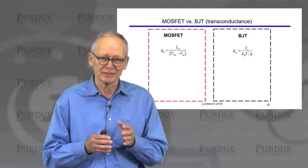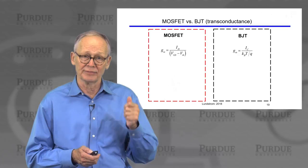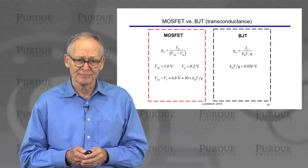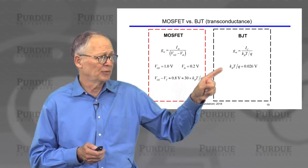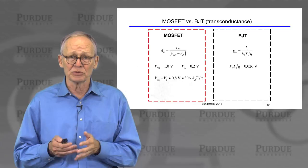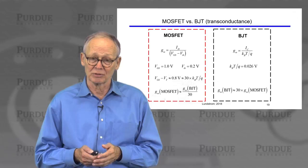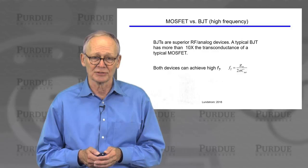Now we compared MOSFETs and bipolars. A key figure of merit for a transistor as an analog amplifier is its transconductance. We can write the transconductance as current divided by some voltage: the voltage for the MOSFET was VGS minus threshold voltage, and the voltage for the BJT was KT over Q. VGS minus VT for a MOSFET is on the order of several tenths of a volt, while KT over Q is very much smaller — roughly 30 times smaller. So the transconductance of a MOSFET is roughly 30 times smaller than the transconductance of a bipolar. This is one of the key benefits of a bipolar — when you need very high transconductance, you would look towards a bipolar transistor.